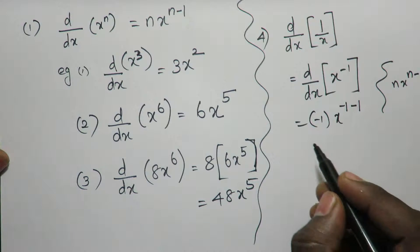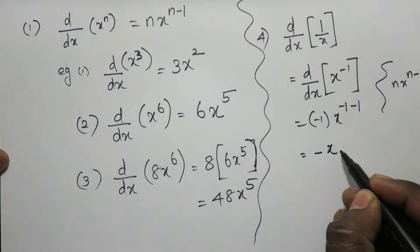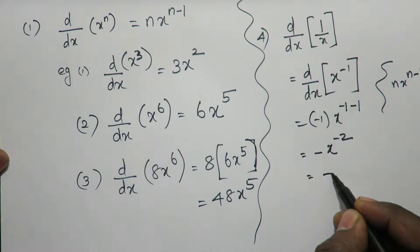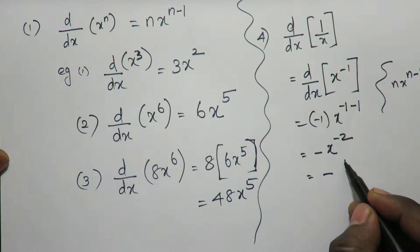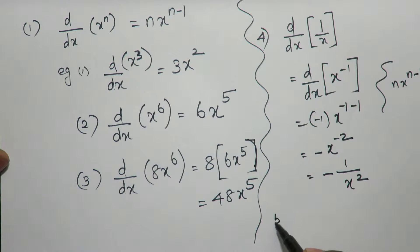Okay, so this becomes minus 1 can be written as minus x to the power minus 2. So can I bring this to the denominator and can I write like this? Minus 1 by x square. This is the differentiation of 1 by x.